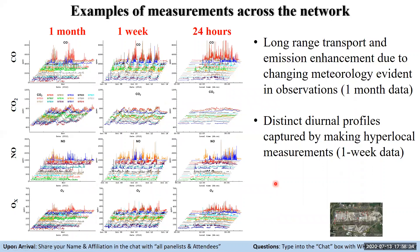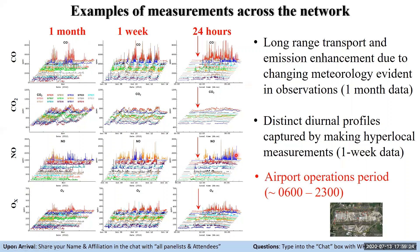This panel shows the information content you can get from the sensor network. Looking at different time windows — one month, one week, and 24 hours — representing different species: CO, CO2, NO, NO2, and Ox. On the one-month window you can see evidence of long-range transport and emission enhancements across the whole network linked to meteorological changes — enhancements in CO, CO2, and Ox. On the one-week window, a distinct diurnal profile linked to airport emissions becomes more evident, and on the 24-hour window we see a very low quiet period from 0000 to 0600 hours, with increasing activity from 0600 onward up to around 2300 hours.